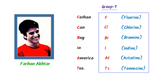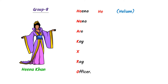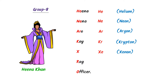Now consider Hina Khan and we know that she is a famous Bollywood actress. I say: Hina Nina are key X-ray officer. Here, He stands for Helium, Ne stands for Neon, Ar stands for Argon, K stands for Kr — Krypton, X stands for Xe — Xenon, R stands for Rn — Radon, and O stands for Og — Oganesson. Thus this is the eighth group of the periodic table.